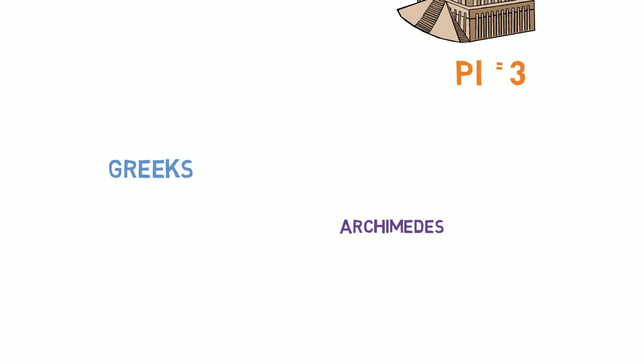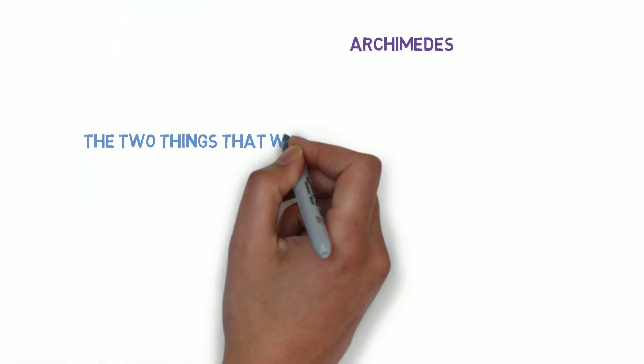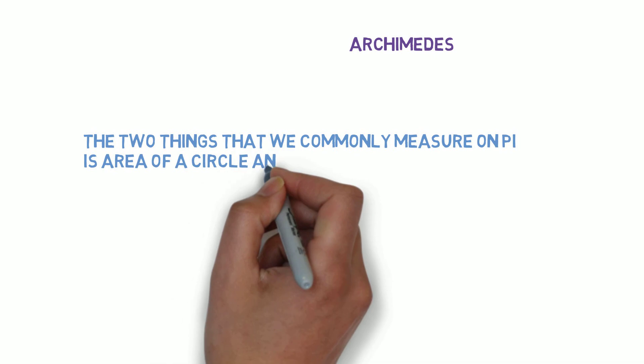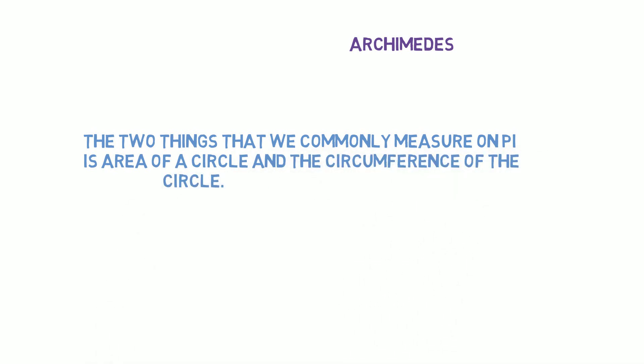Now we use pi in many different areas. Some very common uses of pi are to find the area and the circumference of the circle.